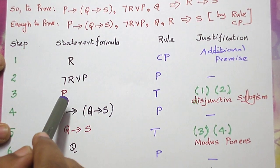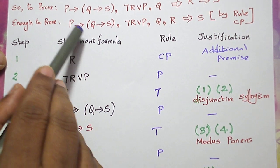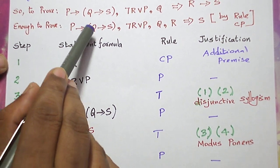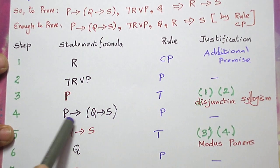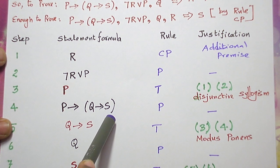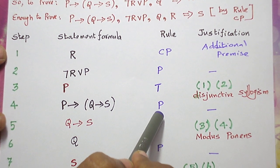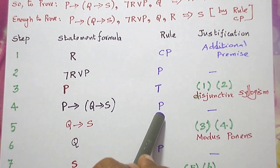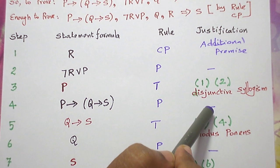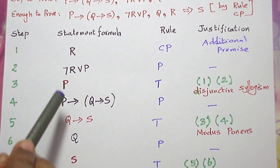Now let me introduce the next premise that involves P. P conditional Q conditional S is the next premise that involves P. This is introduced by rule P, so no justification is needed.